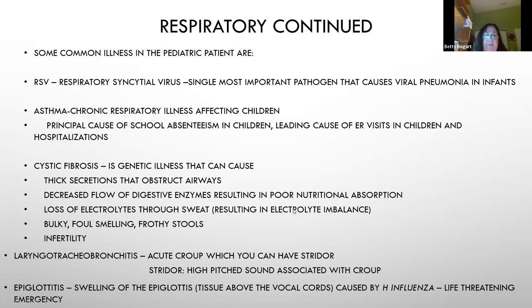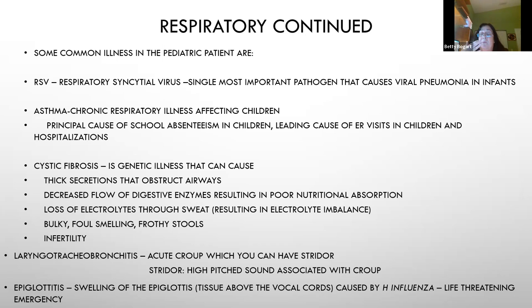Laryngotracheobronchitis is another word for croup. A child with croup has inspiratory stridor — that loud barking sound — because the upper airway is swollen and they can't get air in. If croup progresses, it can swell the epiglottis, which covers the trachea and blocks breathing entirely. This is a life-threatening emergency requiring immediate treatment to decrease epiglottic swelling.